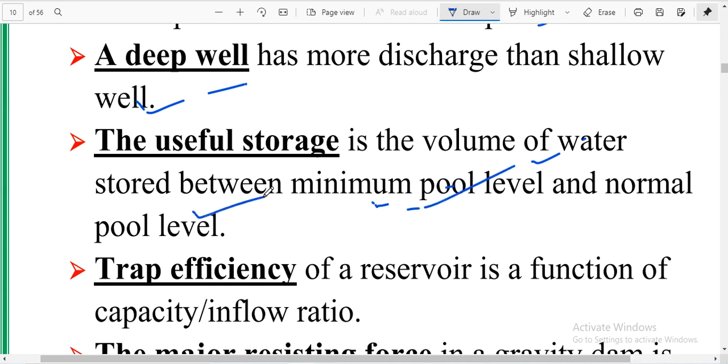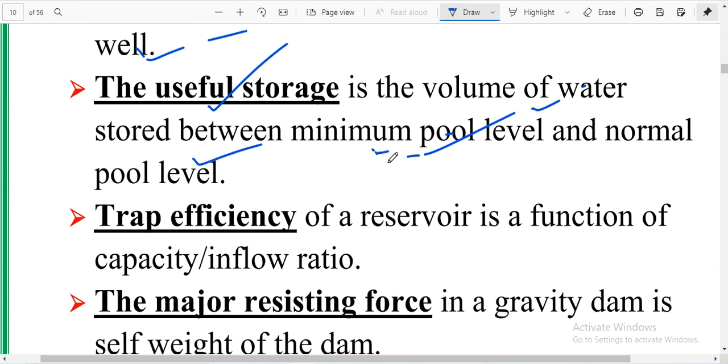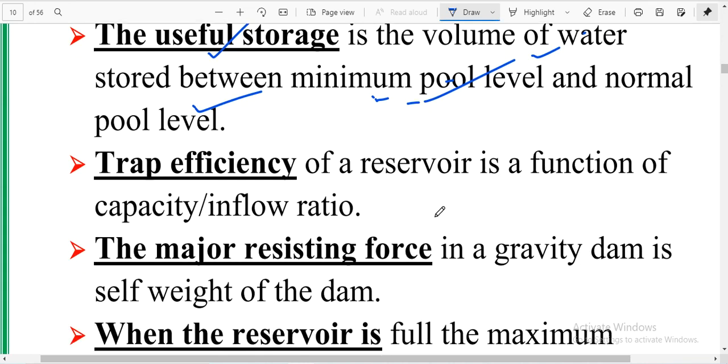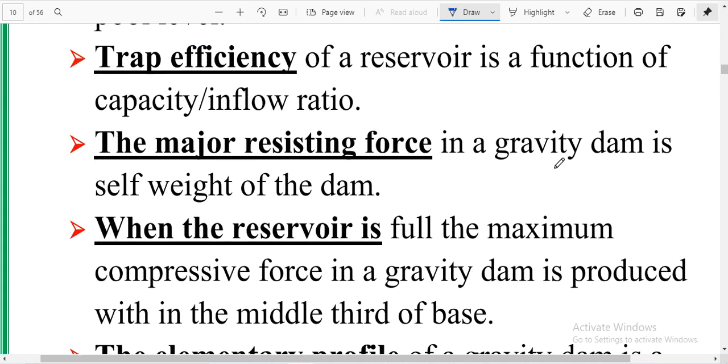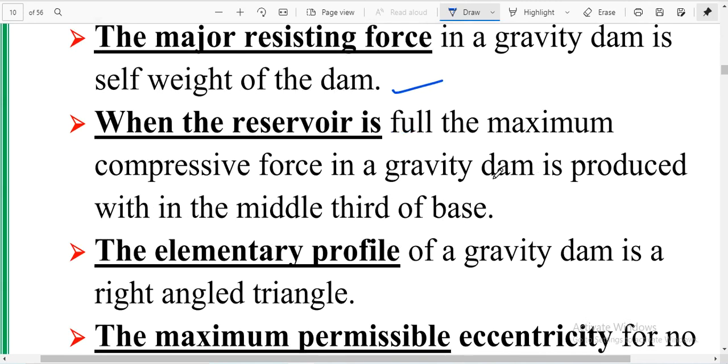Trap efficiency of a reservoir is the function of capacity/inflow ratio. The major resisting force in the gravity dam is self-weight of the dam. When the reservoir is full, the maximum compressive force in a gravity dam is produced within the middle third of the base.